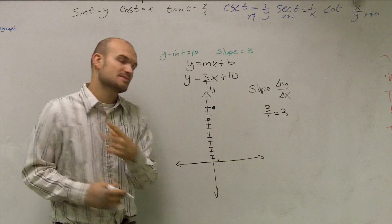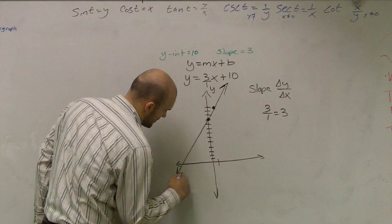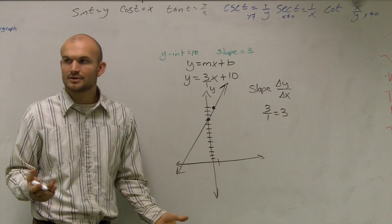So since I have two points, you only need two points to make a line. Connect. And there you go. You got it. A beautiful line.